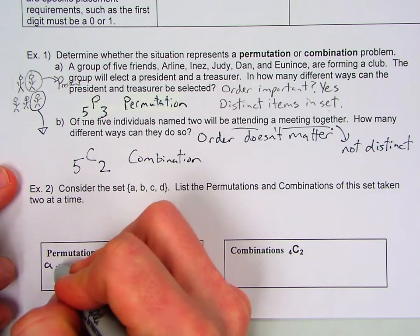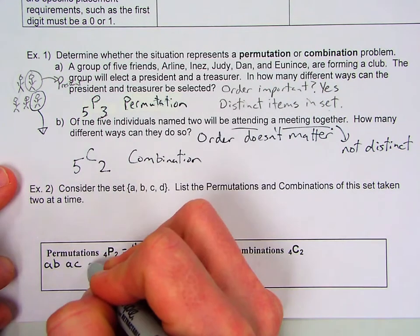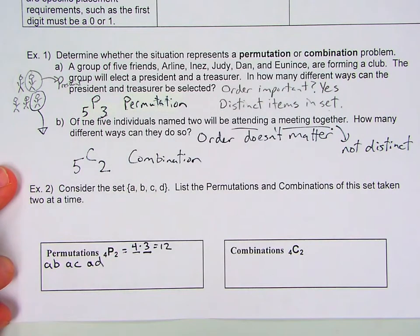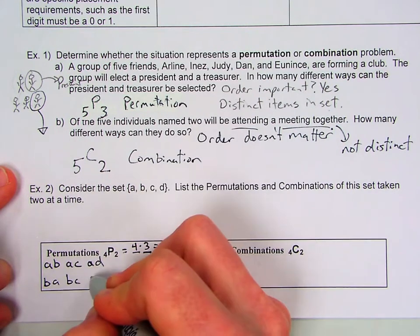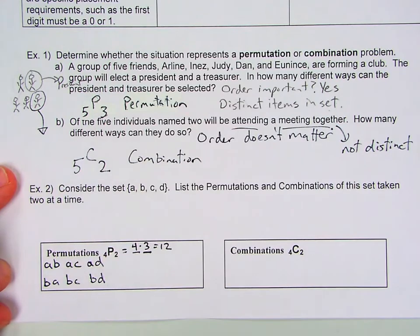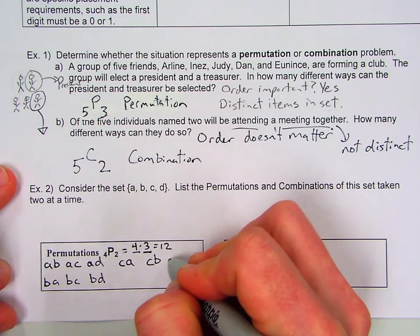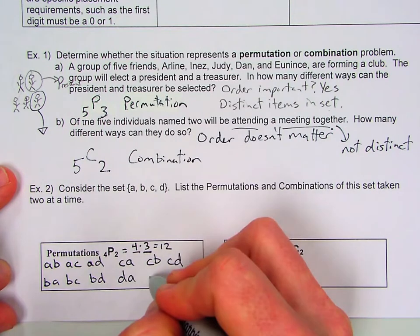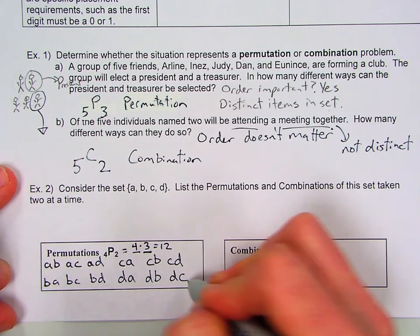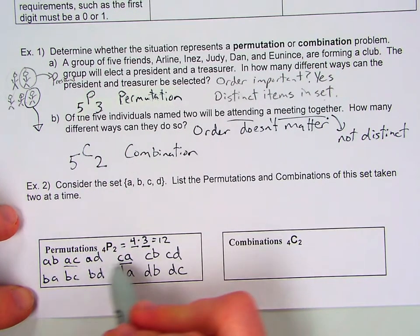So we'll take all the ones that begin with A, so AB, AC, and AD. Then we'll do all the ones that begin with B. So BA, BC, and BD. Then we'll take all the ones that begin with C. So CA, CB, CD. Then all the ones that begin with D. DA, DB, and DC. So there we have 12 permutations. And the order matters so that AC and CA are different permutations.